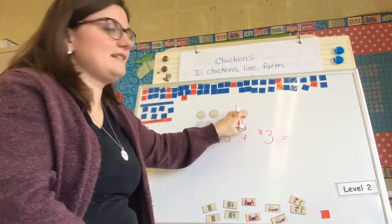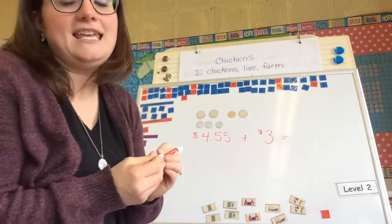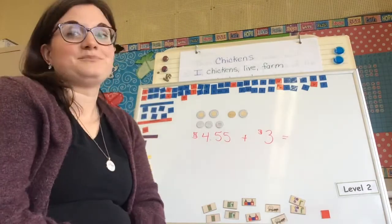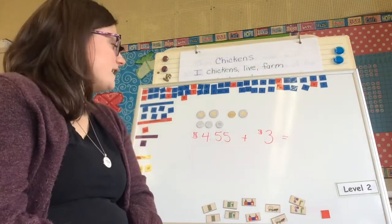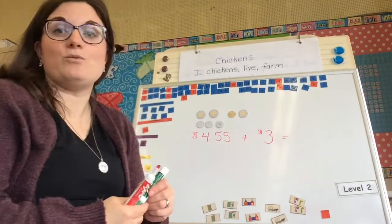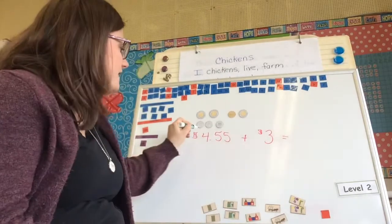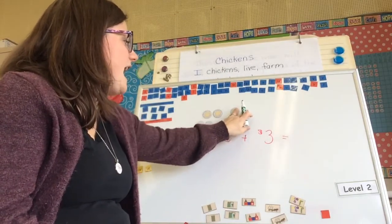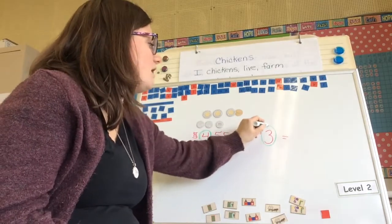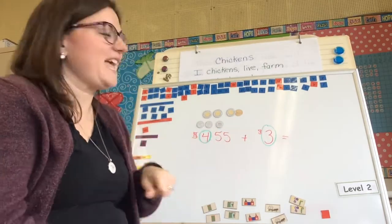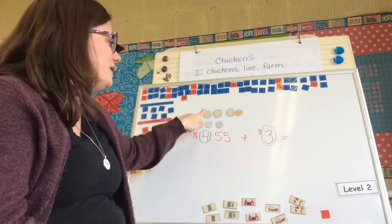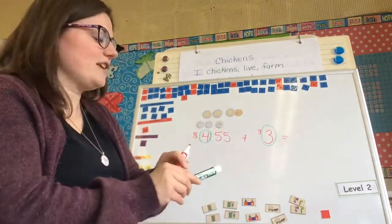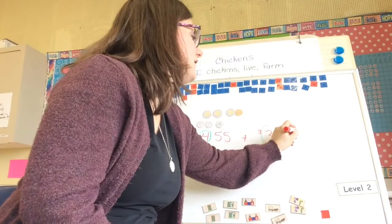If I want to add these together, how much money do I have all together? Let's begin with the dollars. I have $4 in this group, and if I add my $3, how many dollars do I have now? $2, $4, $6, $7. I have $7.